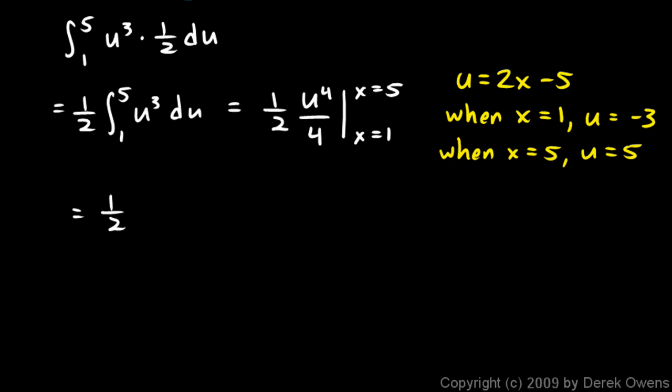So I'm going to have 1 half. Well, let's go ahead and combine the 1 half and the 4 in the denominator. That gives me a 1 eighth. And then I have u to the 4th evaluated. So instead of x equals 1, I'm going to use this fact. Evaluated from negative 3 up to x equals 5, I use that fact. So this is u to the 4th evaluated from u equals negative 3 to u equals 5. And that's not too hard to do. Just put in the numbers.